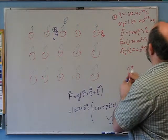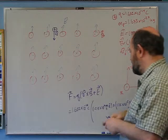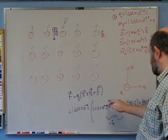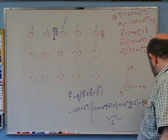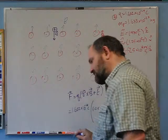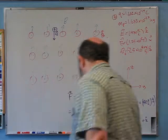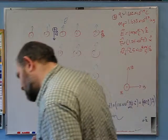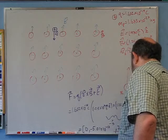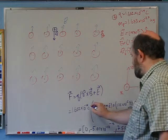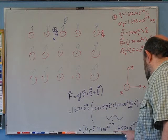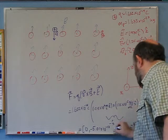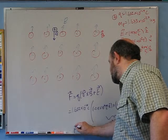Computing F = q[(−2.5×10⁴ m/s z-hat) × (1.25×10⁻² T x-hat)] + q(470 N/C z-hat). The cross product: (−z-hat) × (x-hat) = −y-hat. So the magnetic force is in the minus y-hat direction. The electric force is in the plus z-hat direction. Numerically: F ≈ (0, −5.01×10⁻¹⁷, +7.53×10⁻¹⁷) newtons. The force has both a y and a z component.